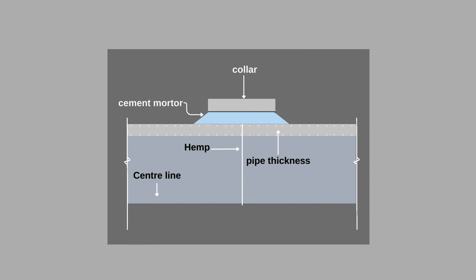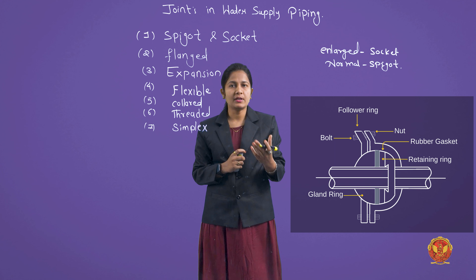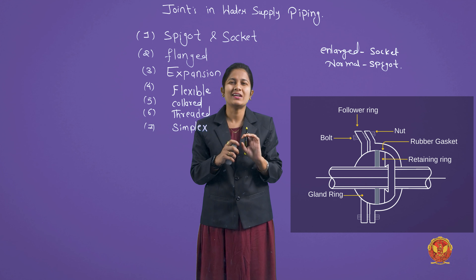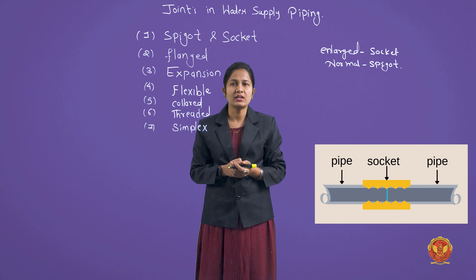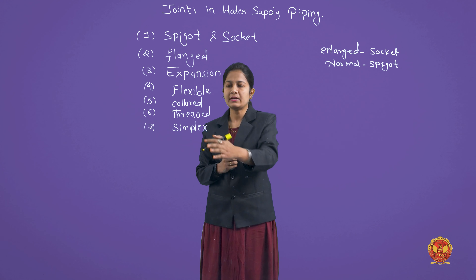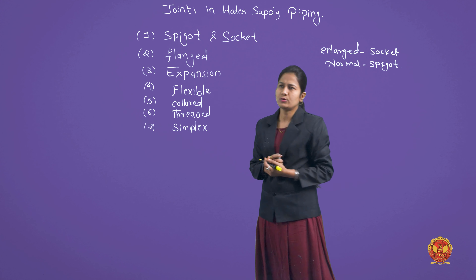Next is the collared joint, which is usually provided in concrete pipes. Another joint is the flexible joint — where there is a requirement of flexibility, we provide a flexible joint. These flexible joints are somewhat complicated. Then the threaded joint, which is used in GI (galvanized iron) pipes. And finally, the simplex joint, which is also used in our water pipelines according to need.